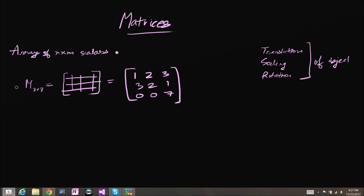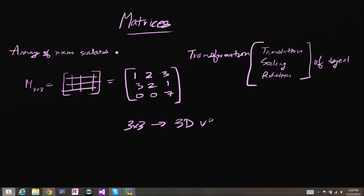Usually in game programming, matrices are used to represent translations, scaling, and rotation — and all these are forms of transformations. So when I say a transformation in any video, it could mean a translation, a scale, a rotation, a yaw, pitch, anything. Also in game programming, 3 by 3 matrices are generally used to represent 3D vectors, and 4 by 4 matrices — which are actually the most important type of matrices to game programmers — are used to represent transformations to 3D vectors.